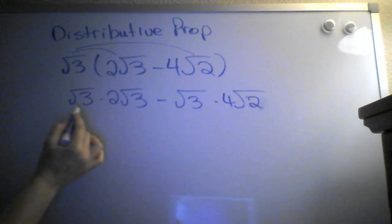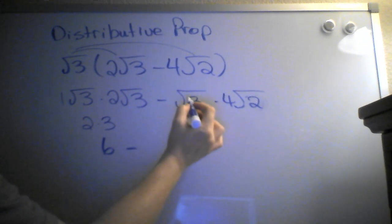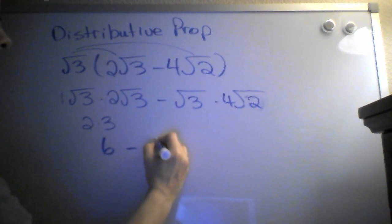So we take radical 3 times 2 radical 3. Well, this again is an understood 1. 1 times 2 is 2, and radical 3 times radical 3 is 3. And so 2 times 3 is 6, minus radical 3 times 4 radical 2 is 4 radical 6.